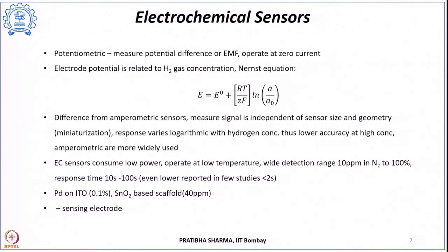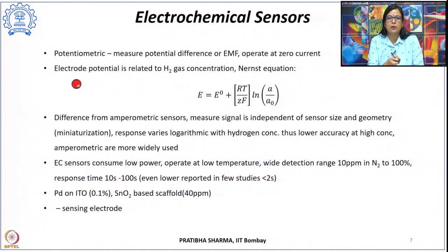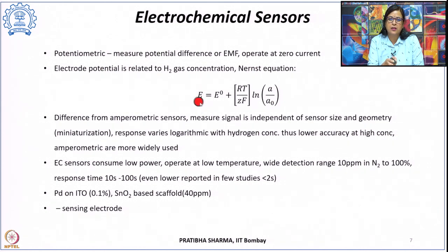In all these sensors, a certain property changes when exposed to hydrogen, and that property must be calibrated against hydrogen concentration. A transducer converts the property change into an electrical signal that can be monitored to find the hydrogen concentration. Depending on which property changes, we can determine the hydrogen concentration present.